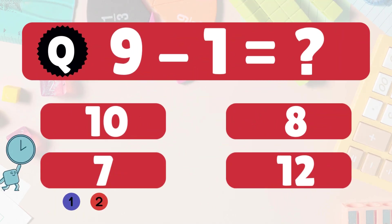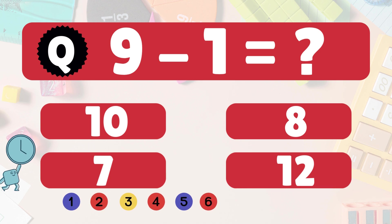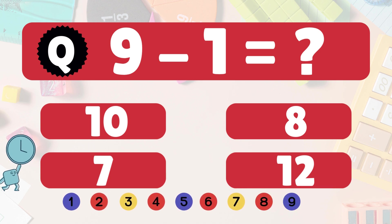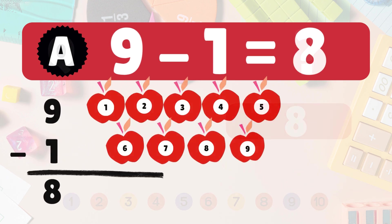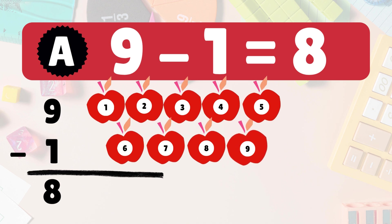Next: 9 minus 1 equals what? 9 minus 1 is 8. Here we have 9 apples. Take 1 away. 8 apples left: 1, 2, 3, 4, 5, 6, 7, 8. So 9 minus 1 is 8. Wow, you're a math star!